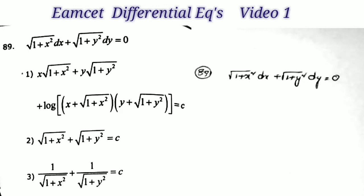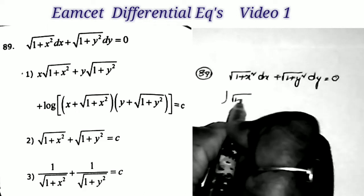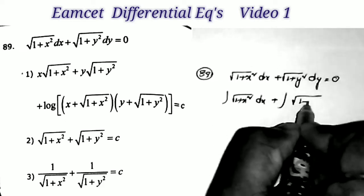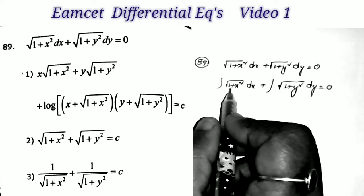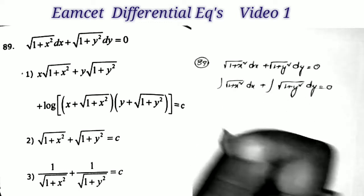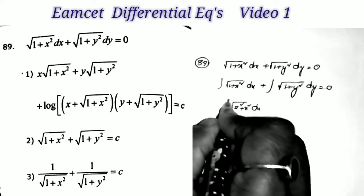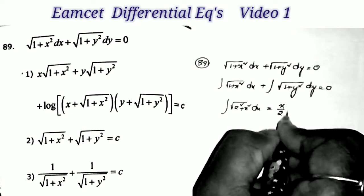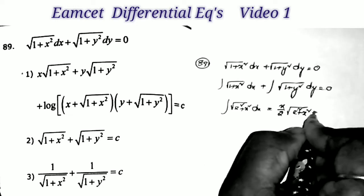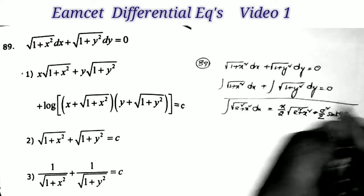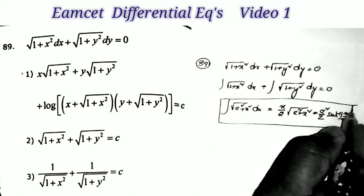Next question, sum number 89: the solution of √(1+x²)dx + √(1+y²)dy = 0. Very easy — directly apply integration since x terms and y terms are already separated. Integral of √(1+x²)dx + integral of √(1+y²)dy = 0. This is in the form of ∫√(a²+x²)dx. The formula is x/2·√(a²+x²) + a²/2·sinh⁻¹(x/a) + c.